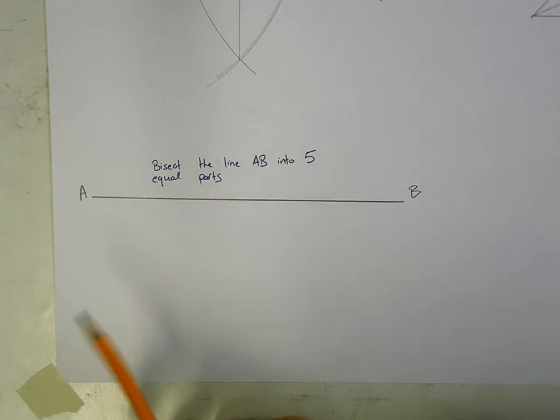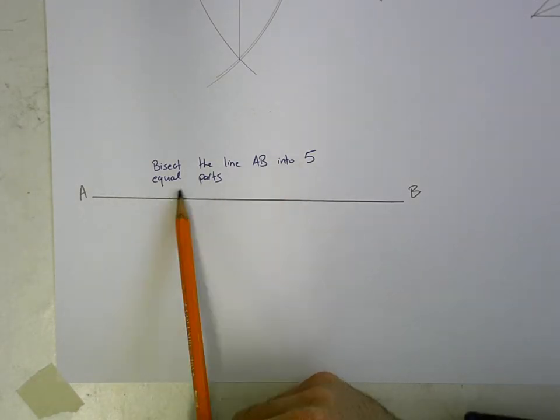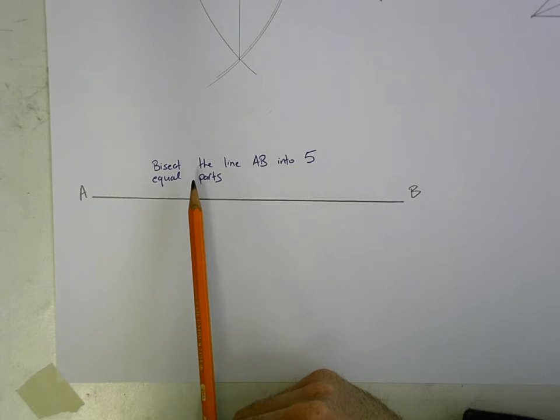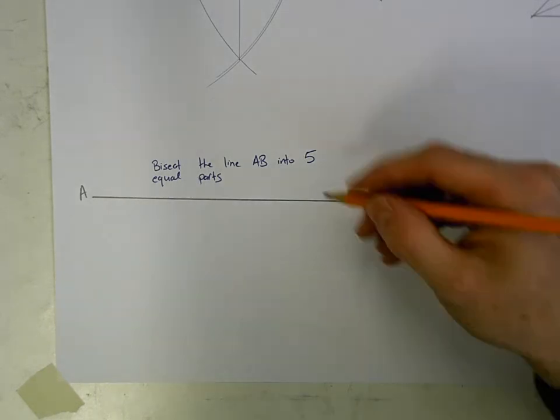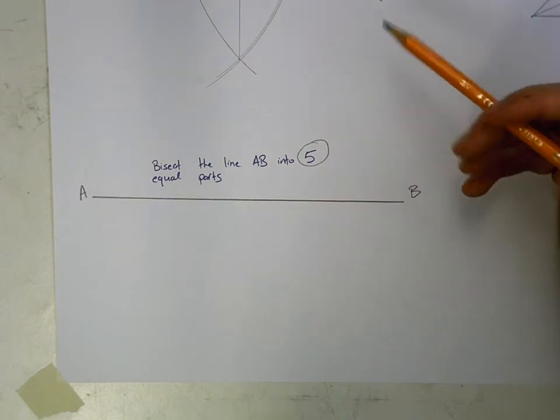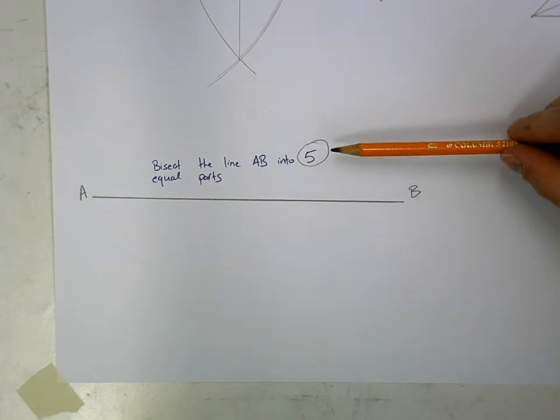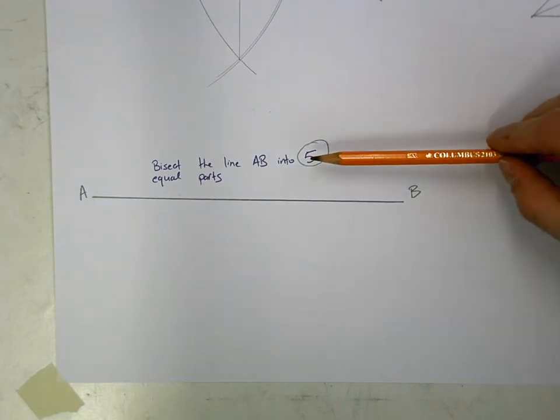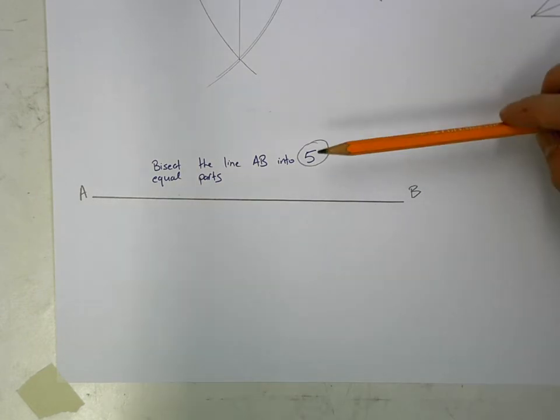Okay, so with this question, they're asking us to bisect the line AB into 5 equal parts. Now I'm just running you through this, but when it says 5 parts, that's just the number I picked out in my head. The same steps apply regardless of the amount of parts.